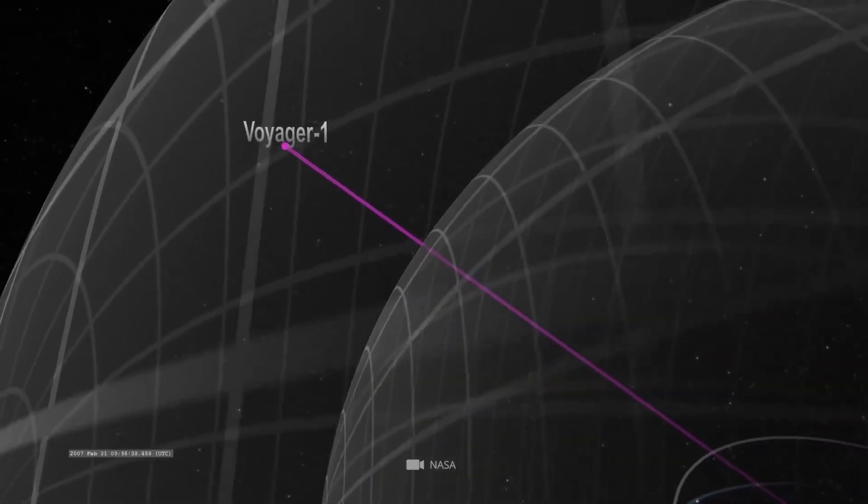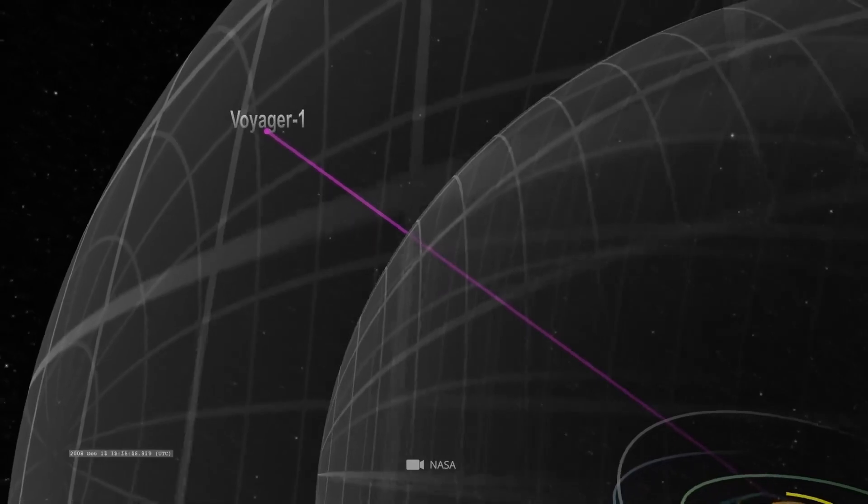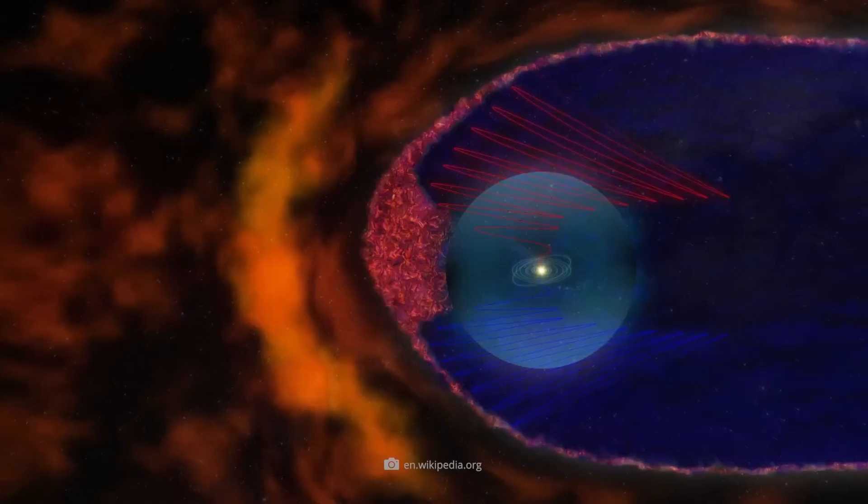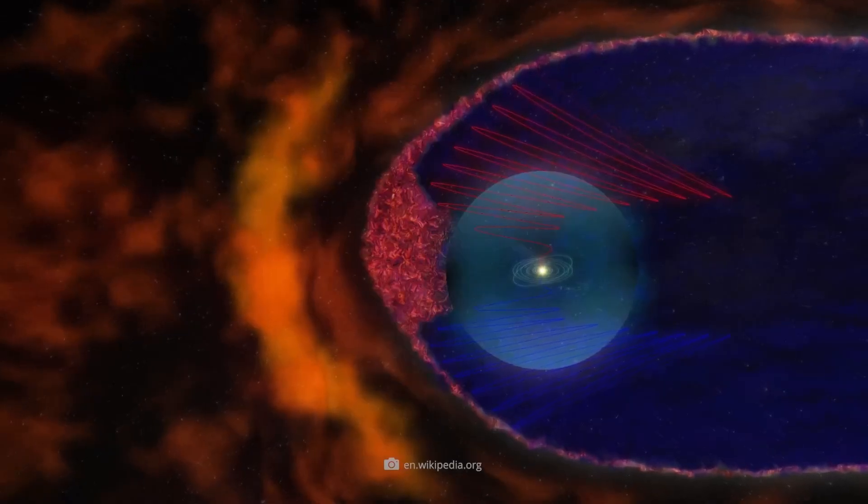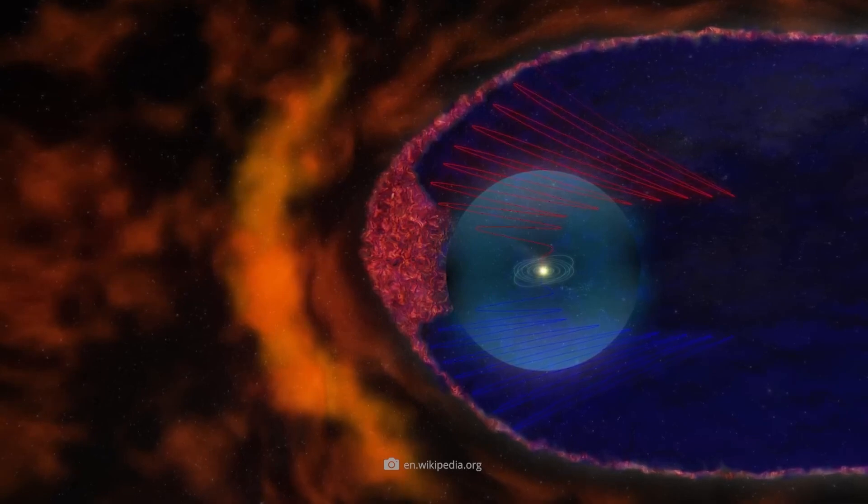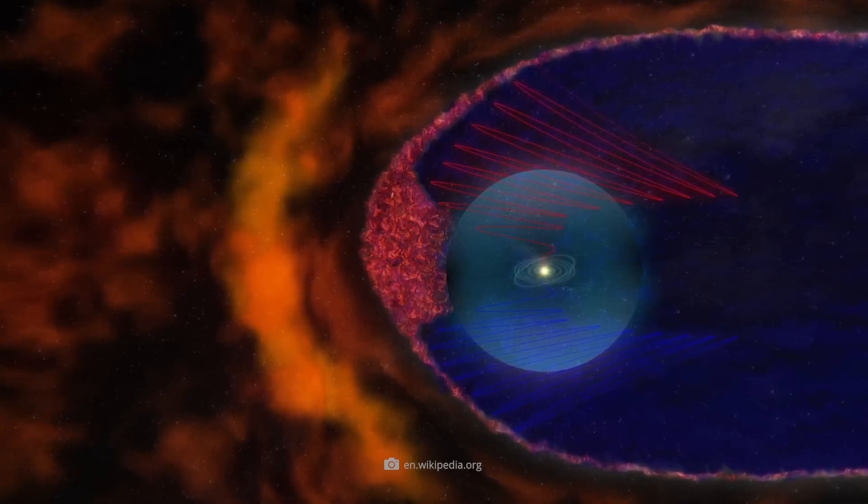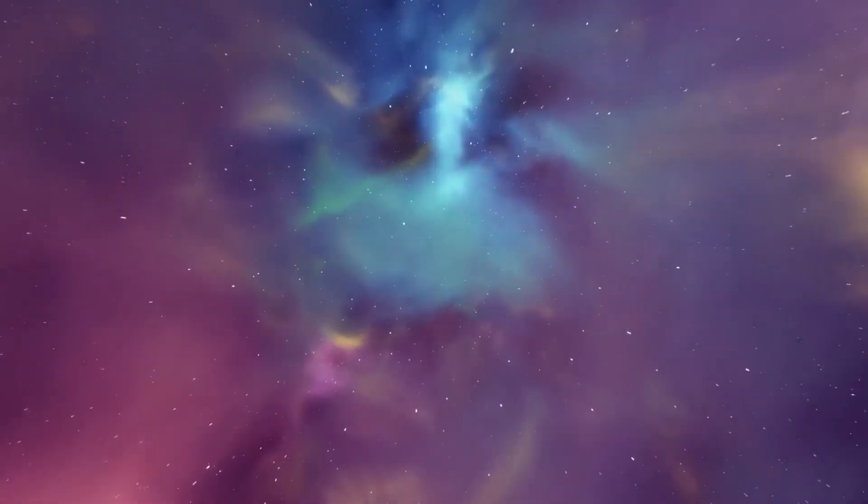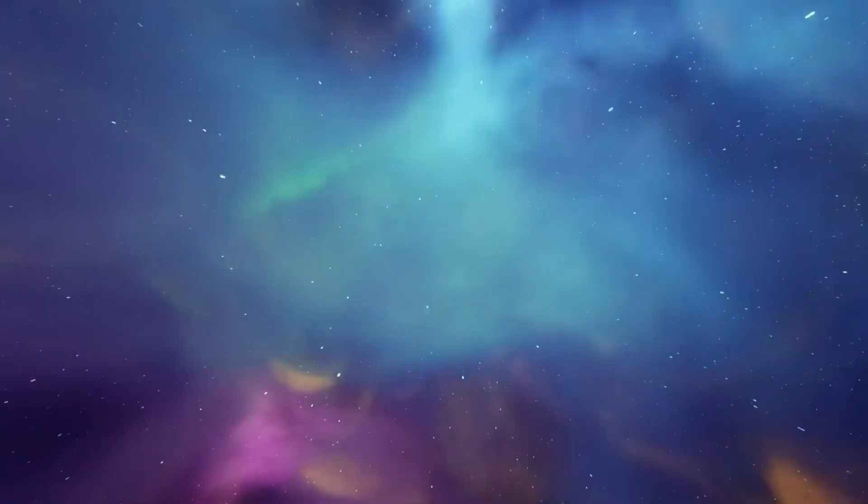The Heliopause seemed to be more like a turbulent mixing region where solar winds and interstellar particles intermingled, blurring the edges between solar and interstellar domains. This insight prompted a re-evaluation of existing models and revealed how much we still don't know about the frontier regions of our solar neighborhood.